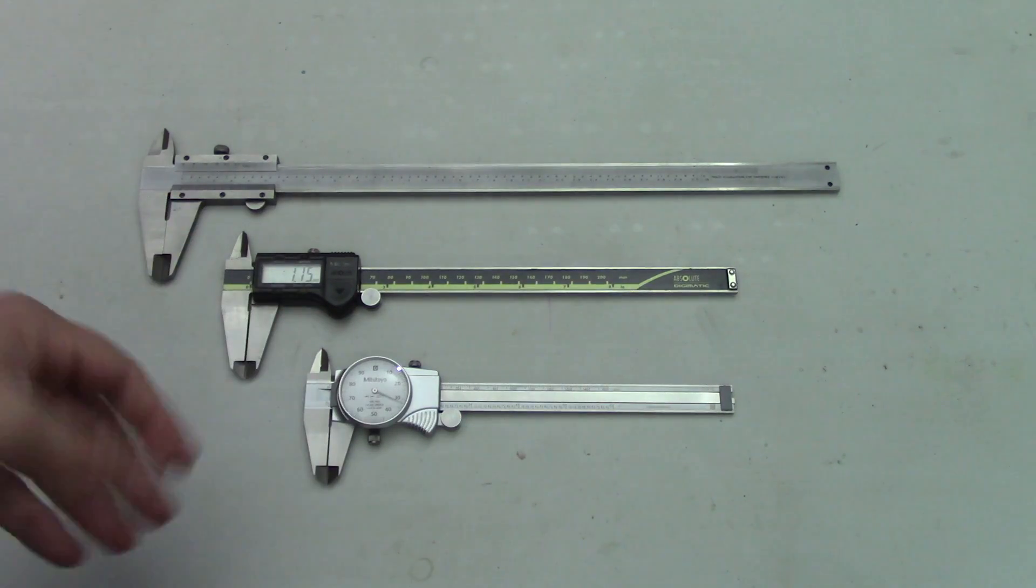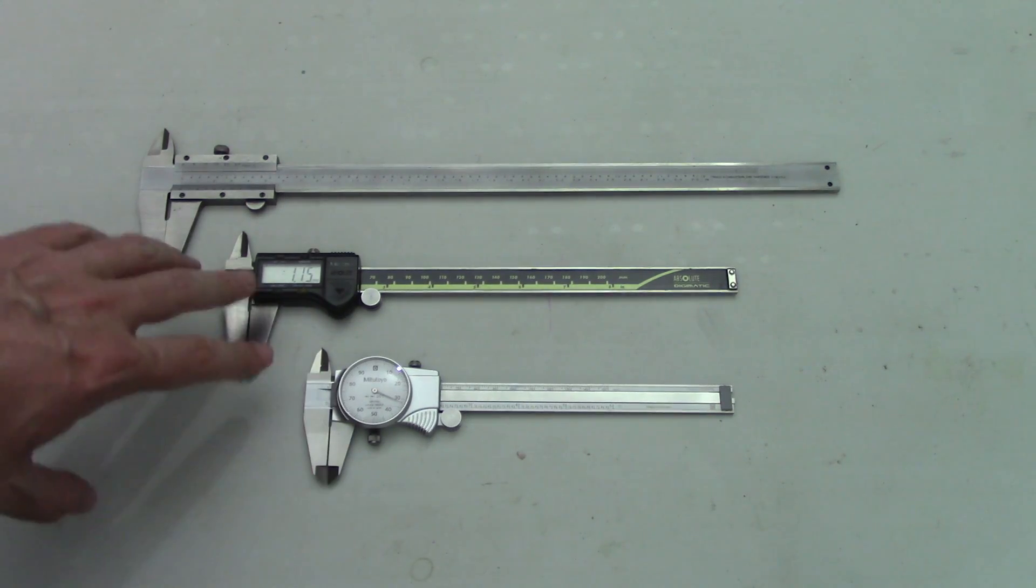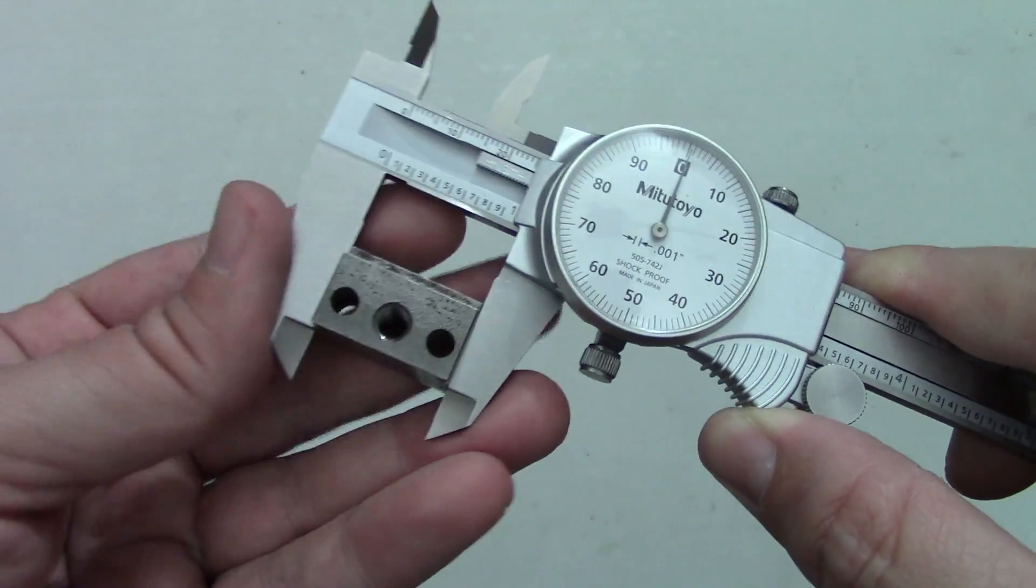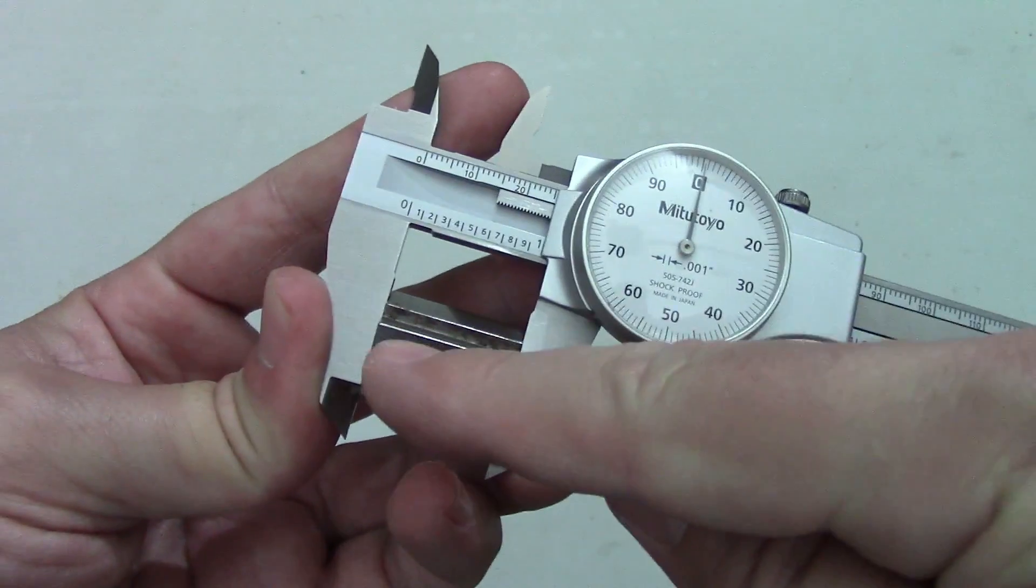From here on out everything applies to both inch and metric dial calipers. There are actually four different ways of measuring with calipers and this part actually applies to dial, digital, and vernier calipers. You can measure outside diameters or features with the main jaws right here.